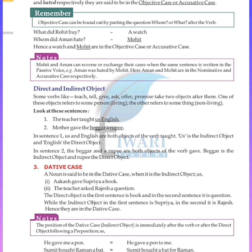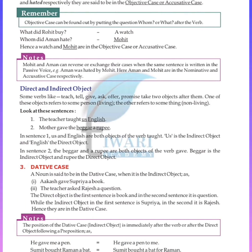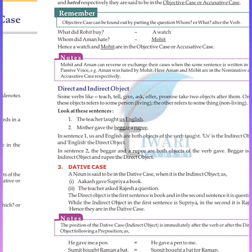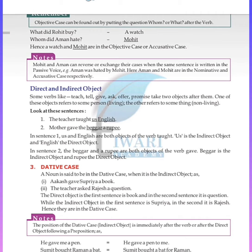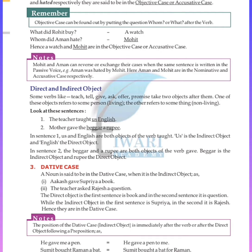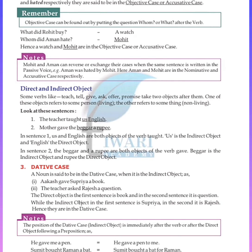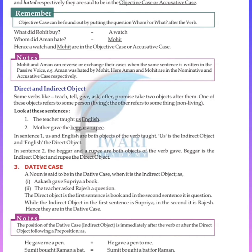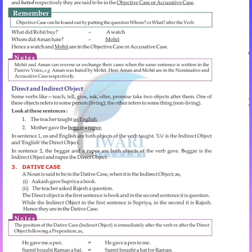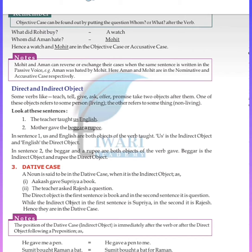Now, what is the meaning of direct object and indirect object? Some verbs like teach, tell, give, ask, offer, promise, take have two objects. One of these objects refers to some person (living) and the other refers to something non-living. For example: The teacher taught us English. Mother gave the beggar a rupee. Here, the beggar and rupee are both objects of the verb gave. The beggar is the indirect object and rupee is the direct object.